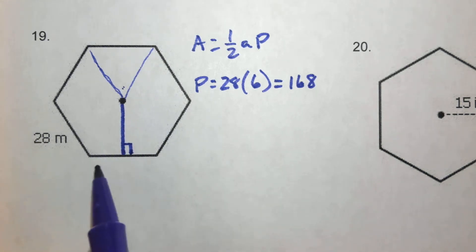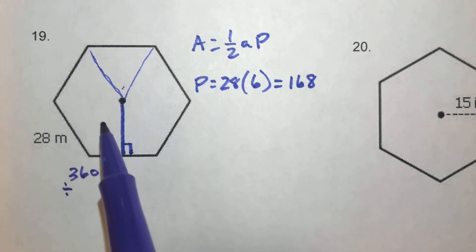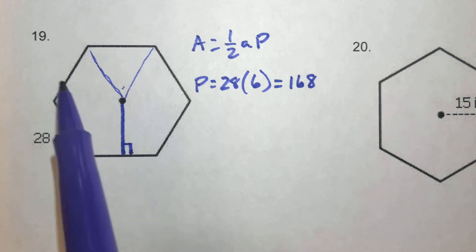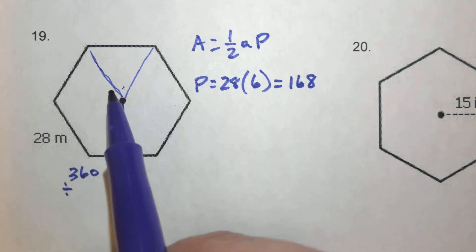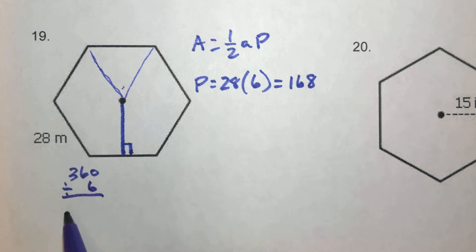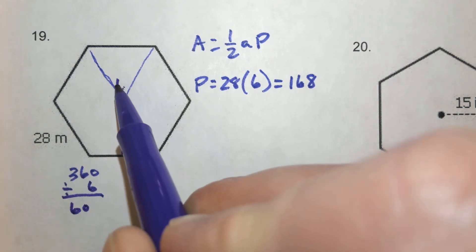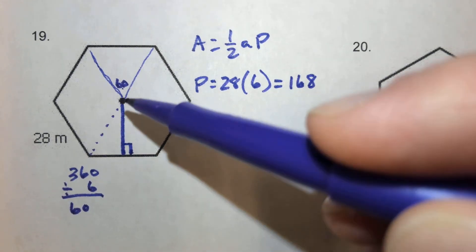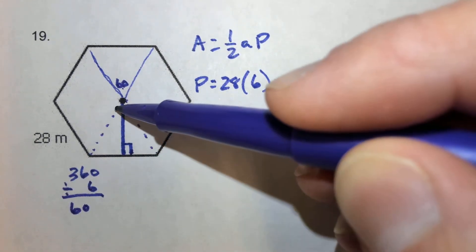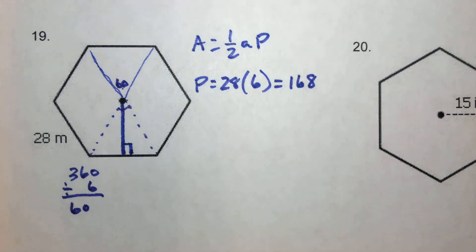So we can take 360 degrees and divide by the number of these angles that would be in the center. And of course, since there are 6 sides, there are 6 triangles, and there would be 6 angles. We can divide by the number of sides, which is 6. Each of these central angles, then, would be 60. So this main angle right here would be 60 degrees.